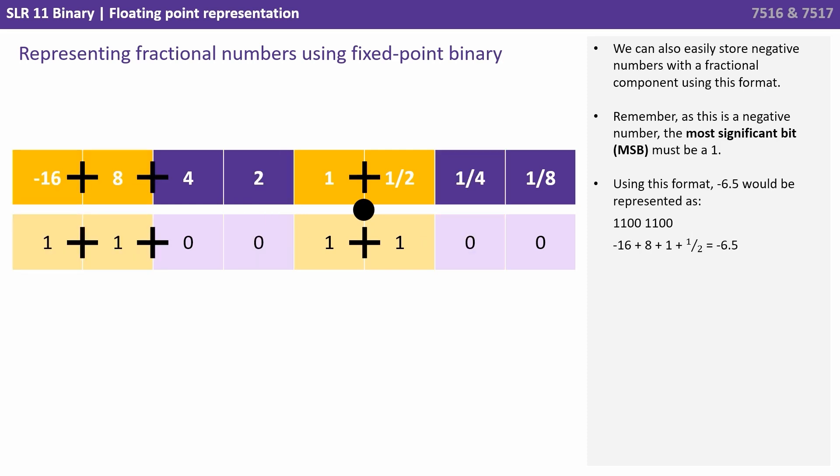We can also easily store negative numbers with a fractional component using this format. Remember, as this is a negative number, the most significant bit must be a 1. Using this format, minus 6.5 would be represented as 1100 1100. A minus 16 plus an 8 plus a 1 plus a half, bringing our value up from minus 16 to minus 6.5.